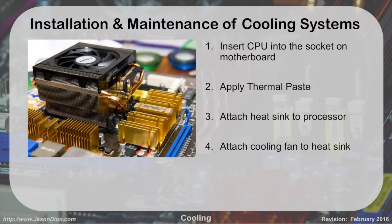How do you install and maintain your cooling systems? First, we put the CPU in the slot on the motherboard. Next, we apply thermal paste, which is a chemical compound that increases heat transfer from the processor to the heat sink. Then we put on the heat sink, and finally we put the cooling fan on top. That's a traditional active cooling system. If you're doing liquid cooling, it's a little different — we'll talk about that in a couple of slides.